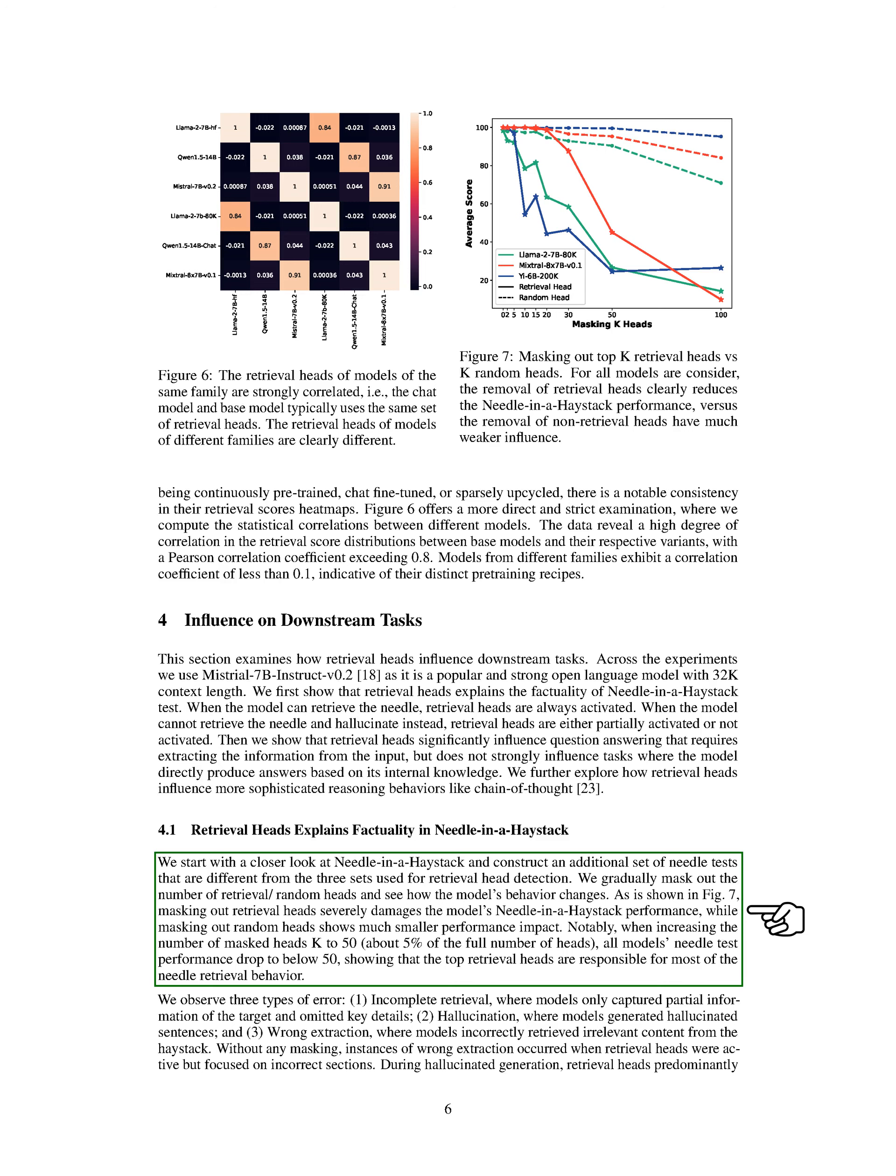Our findings revealed that masking out retrieval heads significantly impairs the model's performance in needle in a haystack, while masking out random heads has a much smaller impact. When we masked out a larger number of retrieval heads, the model's performance dropped drastically, indicating that the top retrieval heads play a crucial role in needle retrieval.